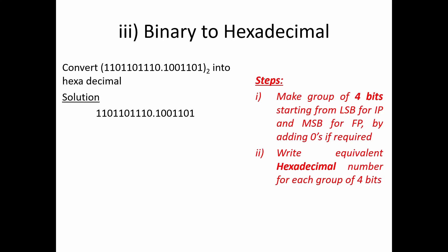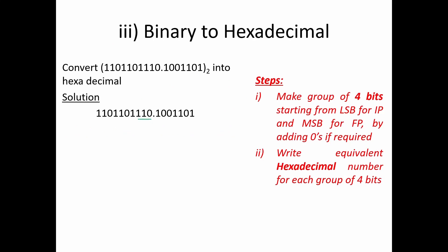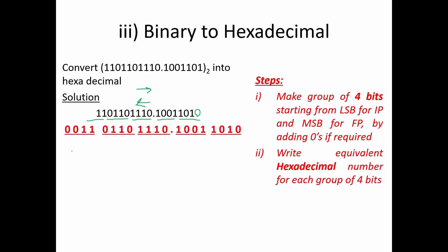For the given binary, the first group of 4 bits from LSB is identified, then the second group, and for the third group two zeros are added. In the fractional part, the first group and second group are formed — with 3 bits present, one zero is added. The groups come out as 0011, 0110, 1110, and 1001, 1100. The hexadecimal answer is 36E.9C base 16.